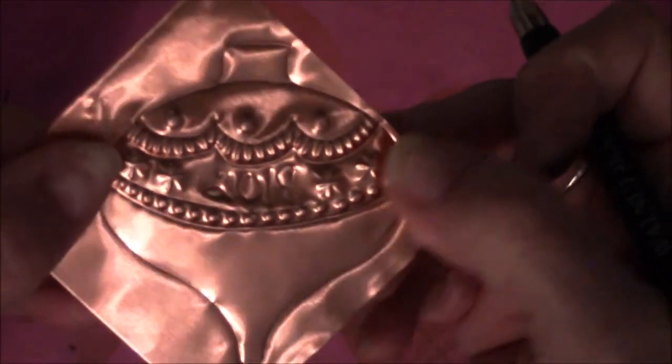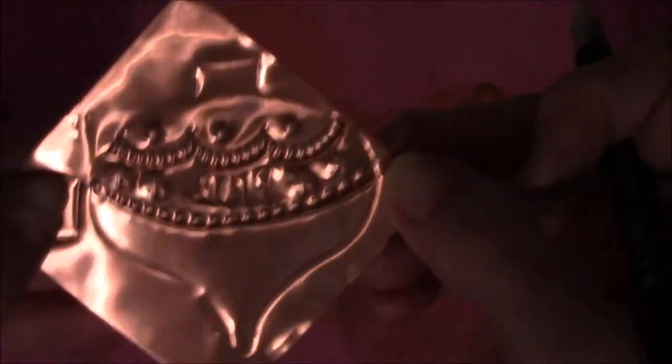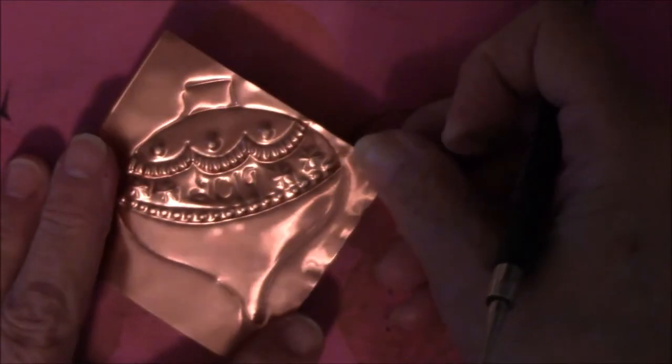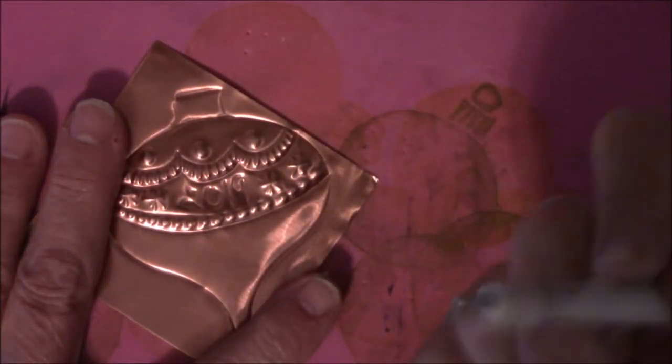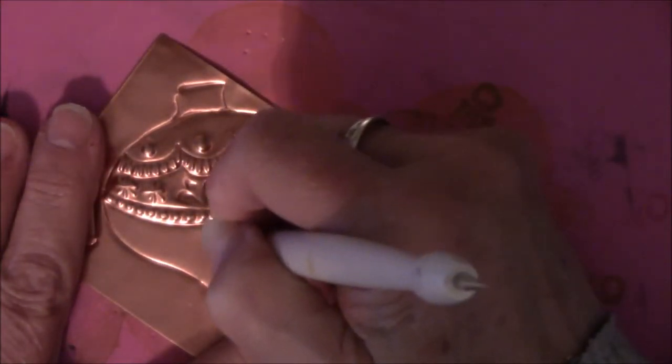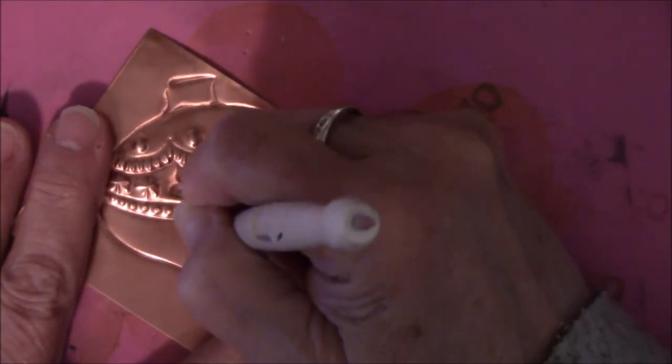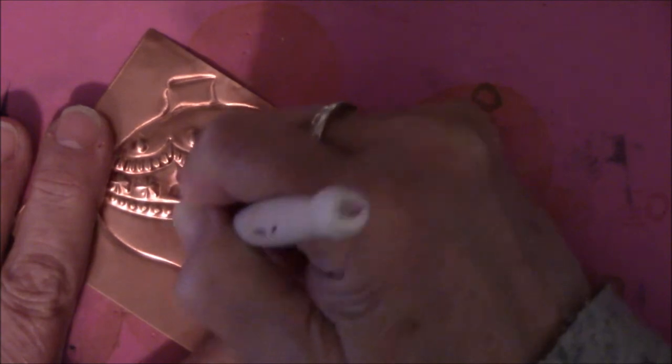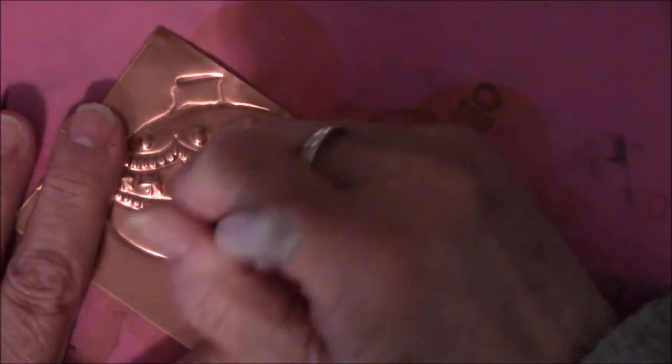All righty, so I think what I want to do next is I want to take this and I'm going to put some kind of a maybe a bling in there. So let me make a larger indentation here. I'm just taking it and rubbing it into the metal.